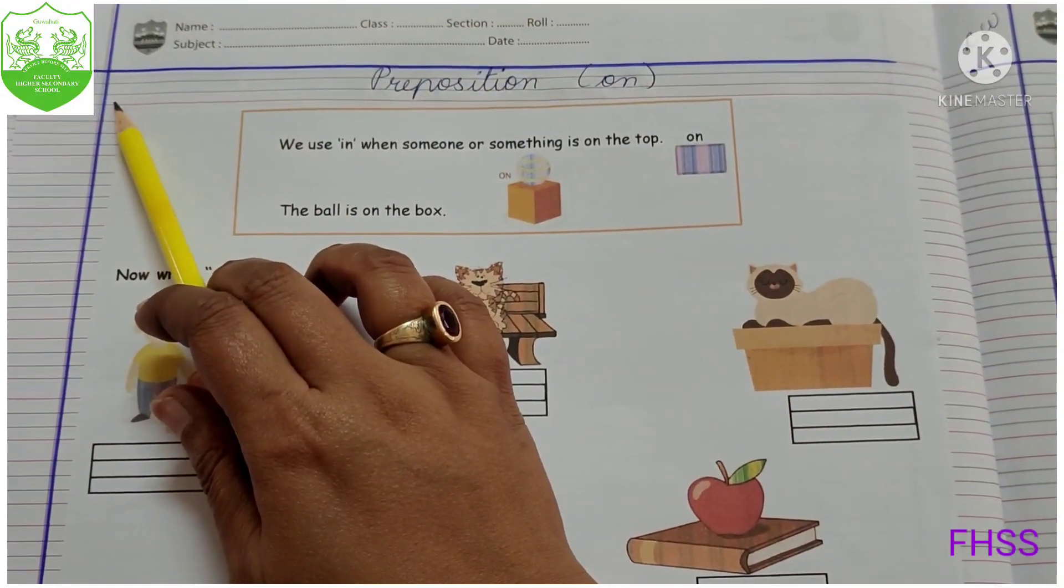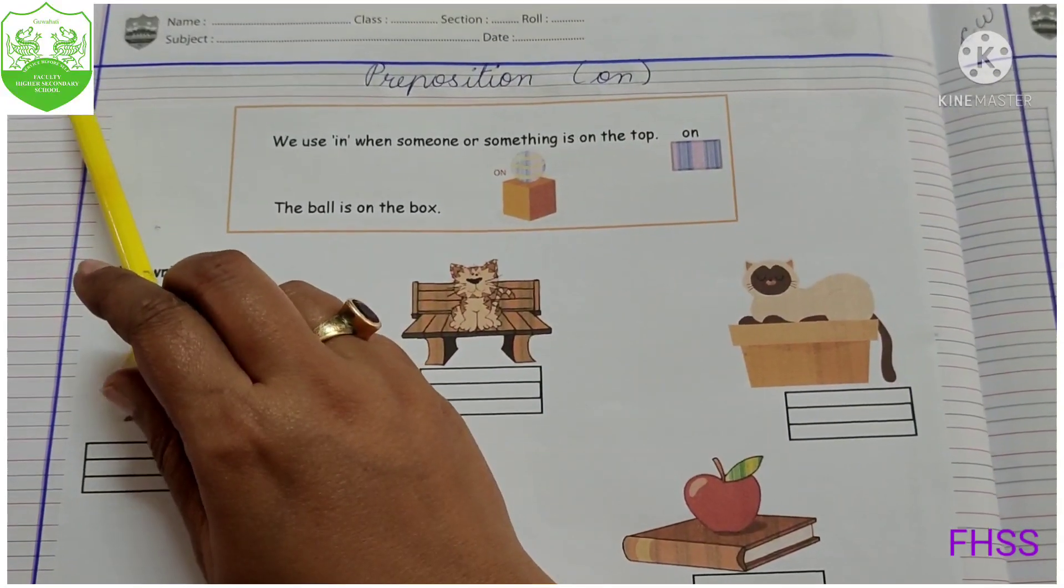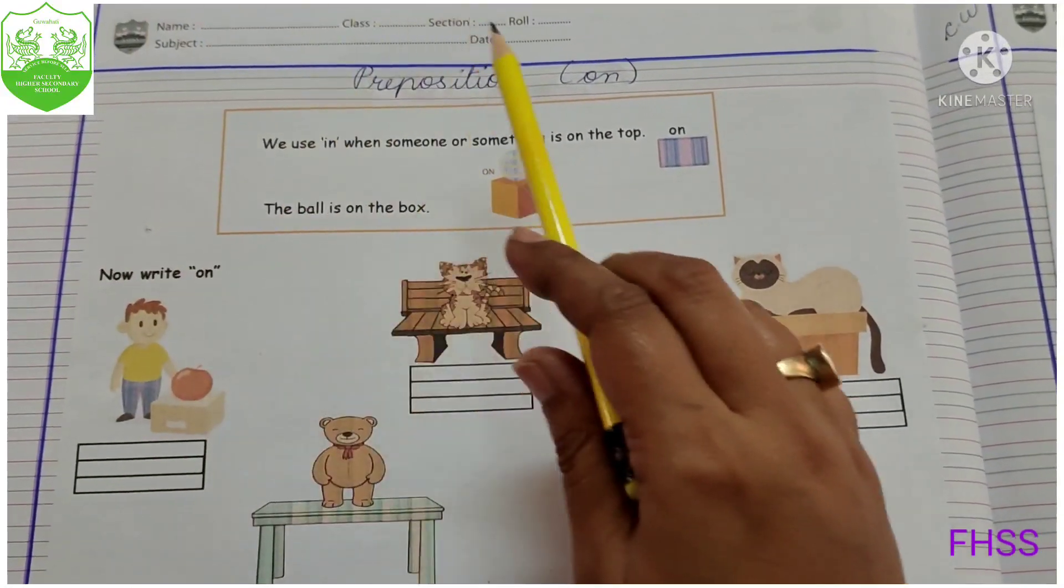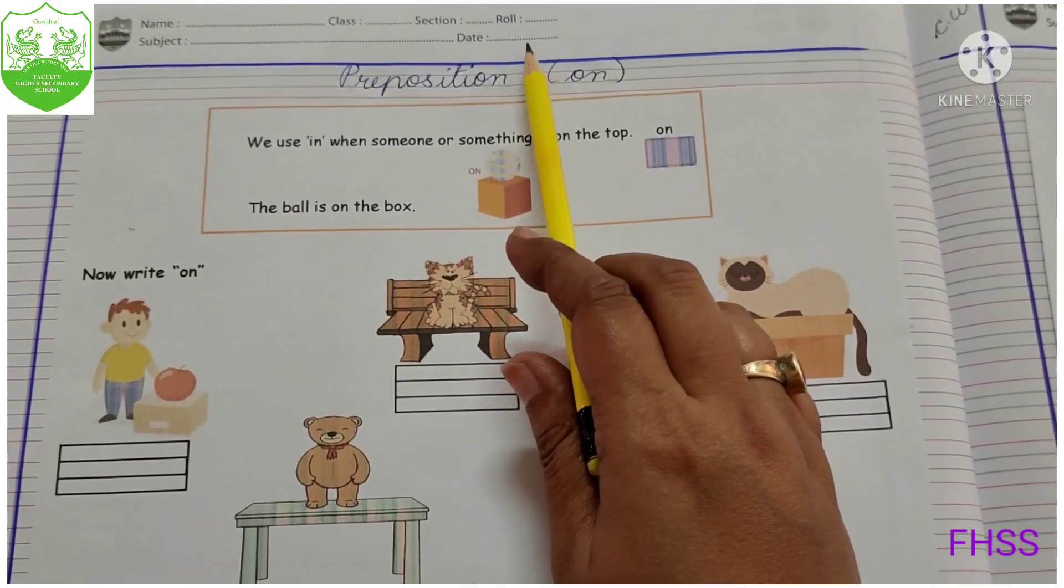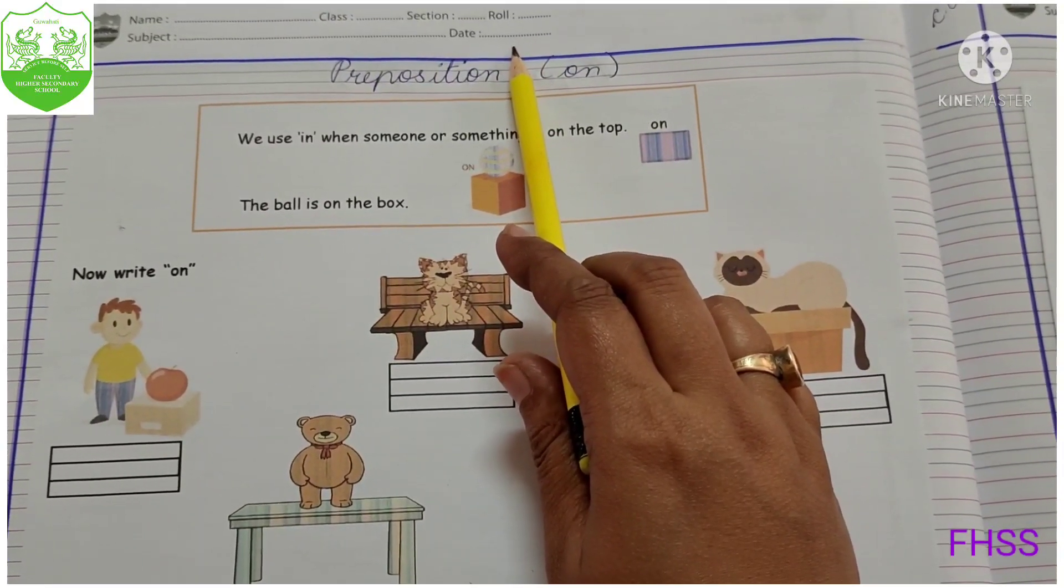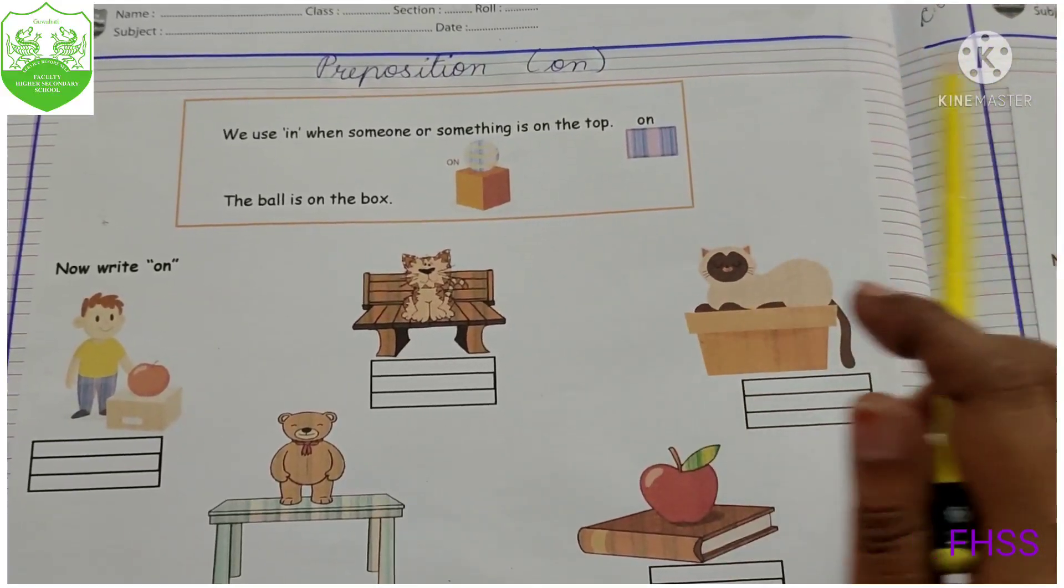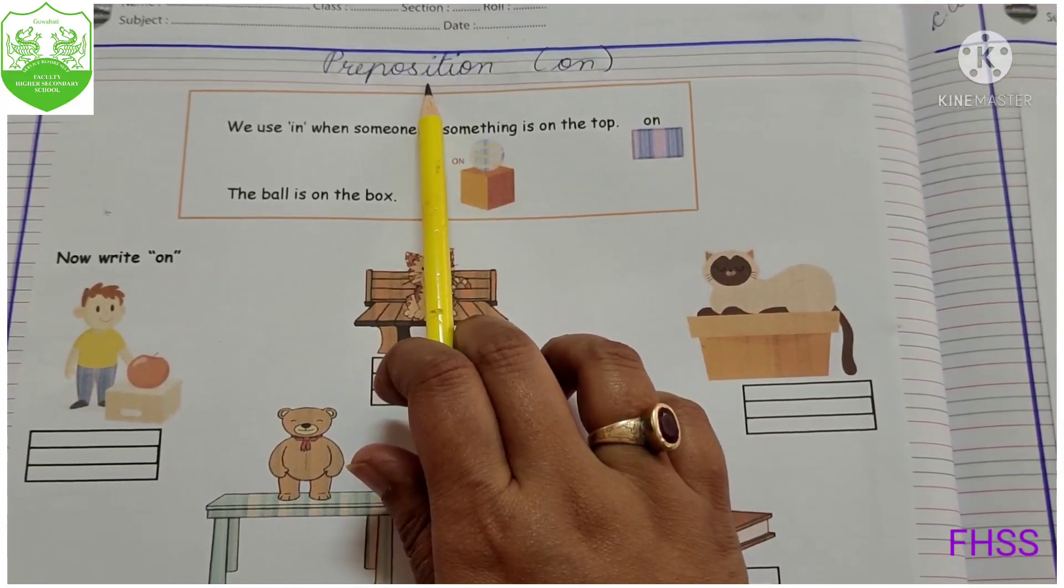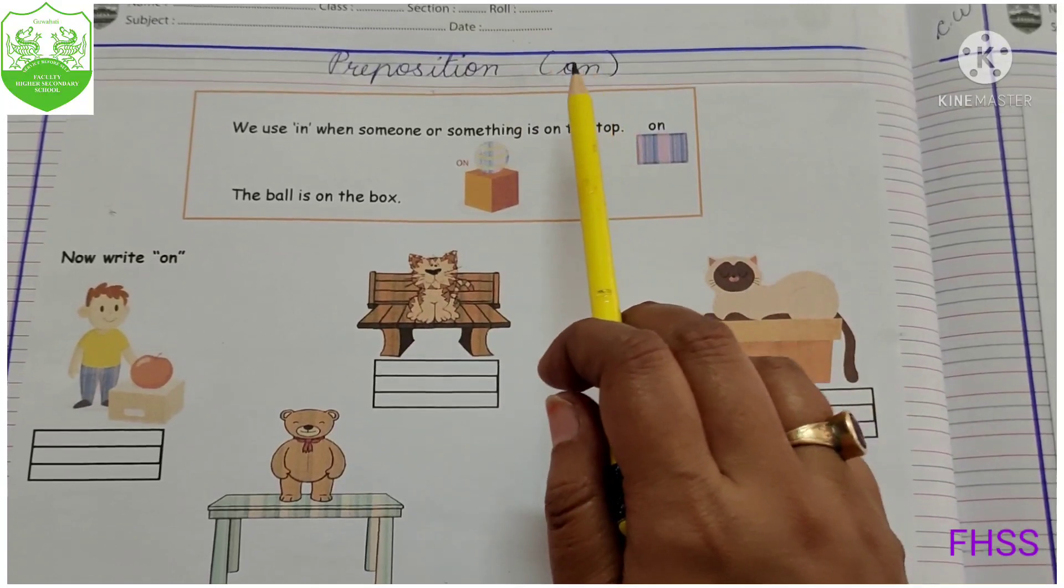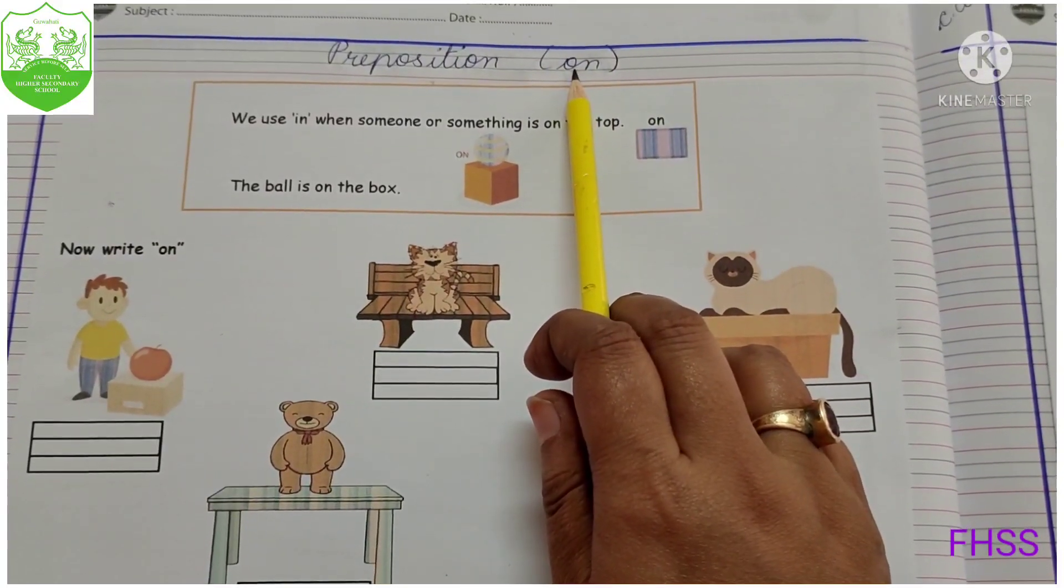Okay? So first what you have to draw? Margin. Yes. Then what you have to write here? CW and today's date. So today's date you know already? Today's date is 18-10-November-2021. And today's our topic is preposition. Okay? And today we have learned about on.